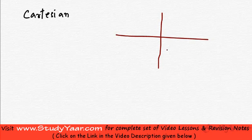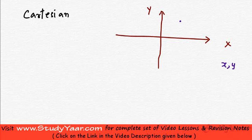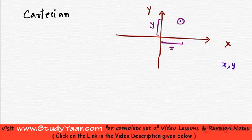In my Cartesian two-dimensional system I have an x-axis and a y-axis, and a point is represented as (x, y). X is the distance along the x-axis and y is the distance along the y-axis. So essentially you are saying that to reach this point you have to move along the x-axis a distance of x and then move along the y-axis a distance of y.